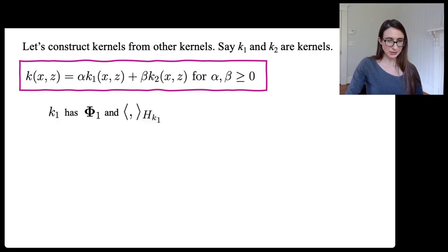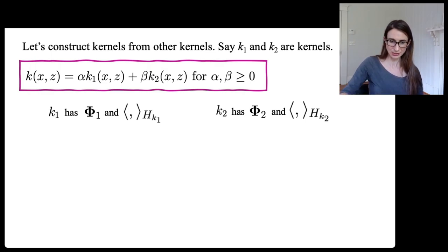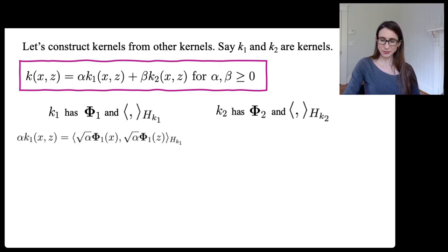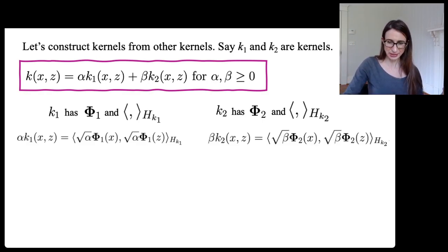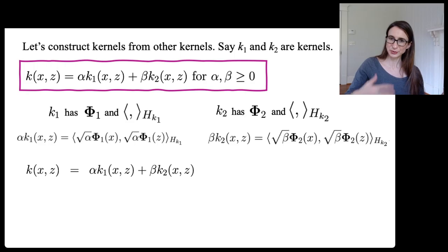Okay, so how do we know this? Well, both K1 and K2 are valid kernels, so they both correspond to reproducing kernel Hilbert spaces with their own feature maps and inner products. I can use the bilinearity of the inner product and also the fact that the alphas are non-negative to sort of send that alpha in and divide it between the two, the left and right side there, same with beta. And then I can write K in terms of K1 and K2.